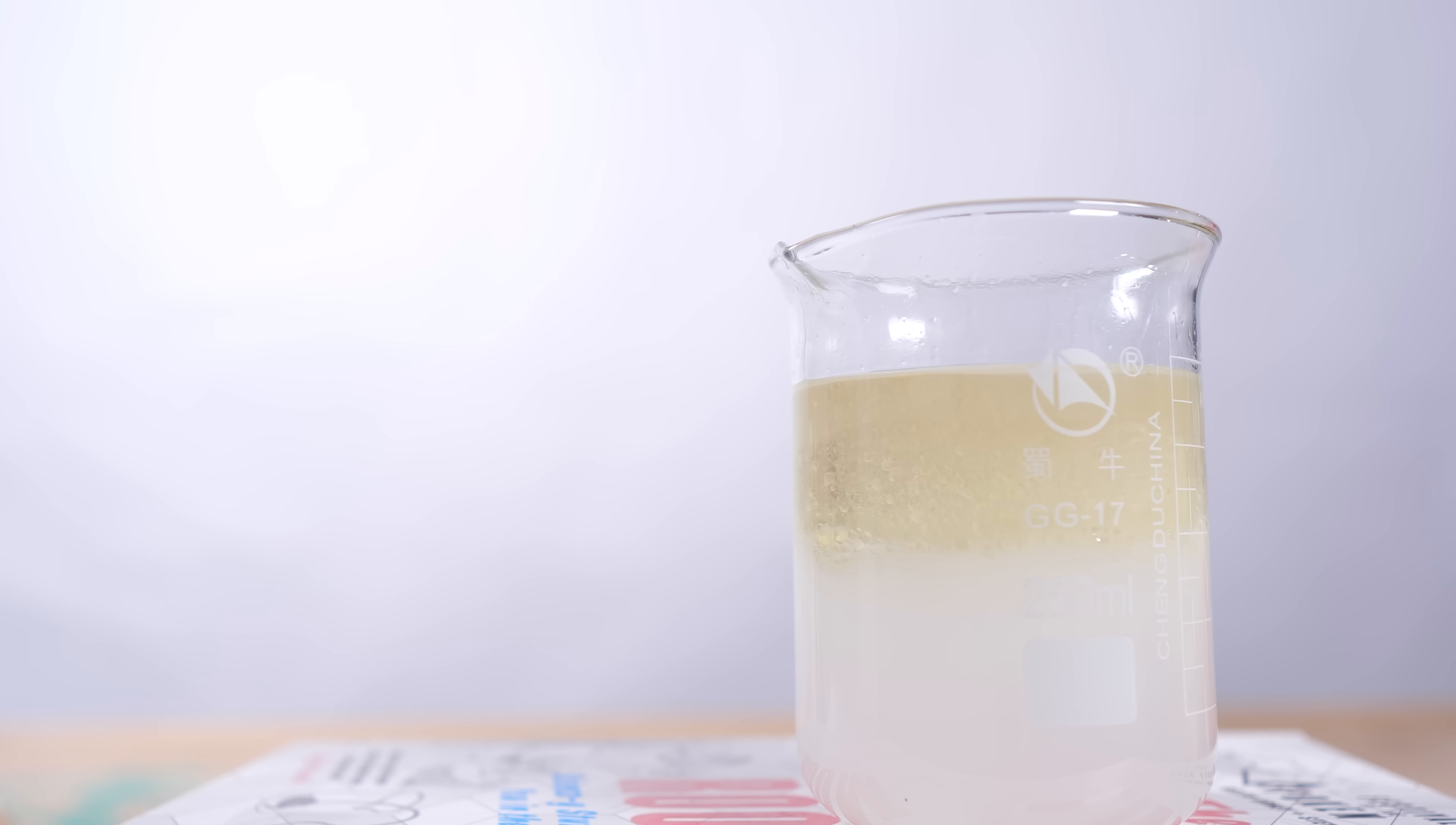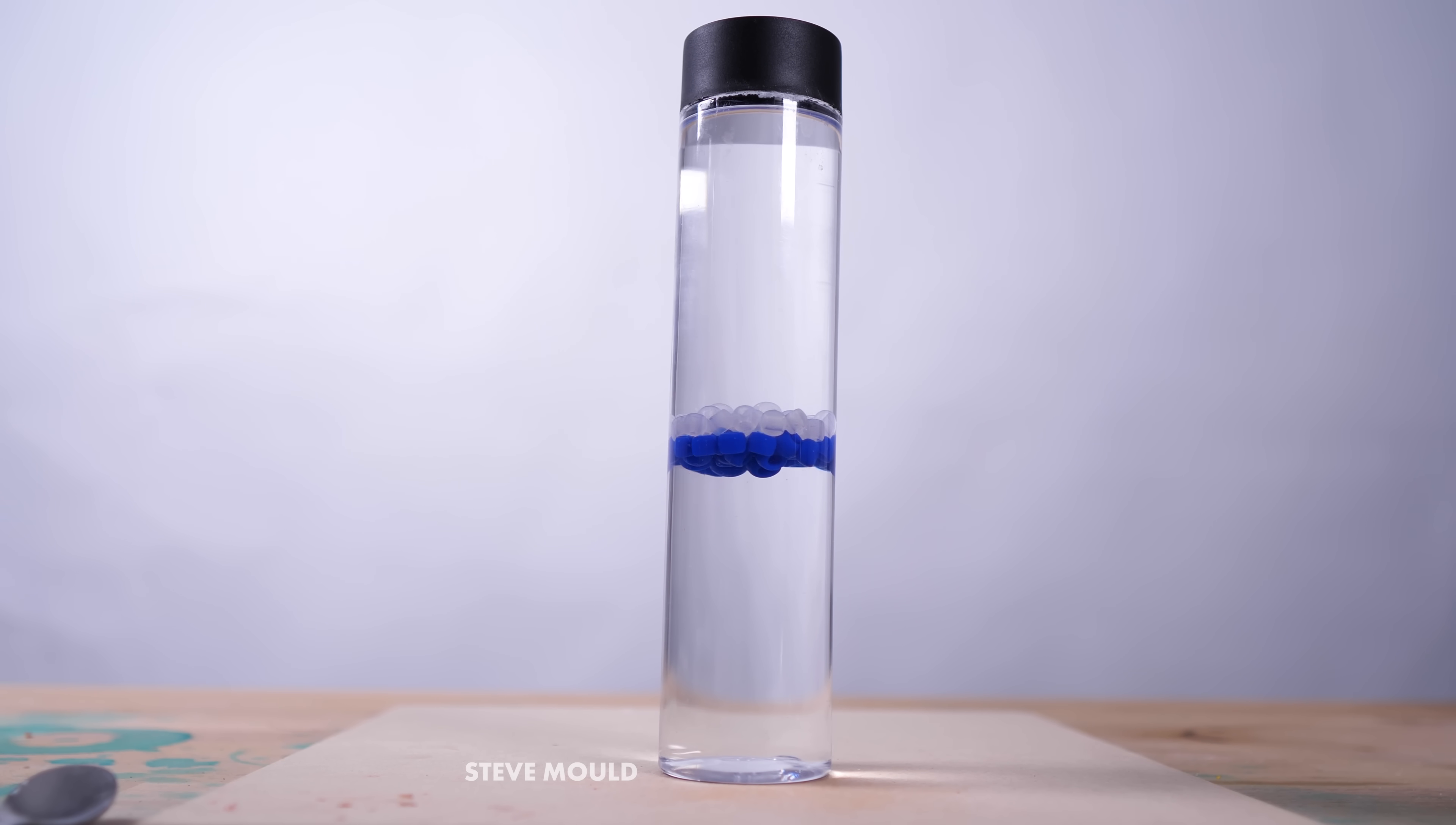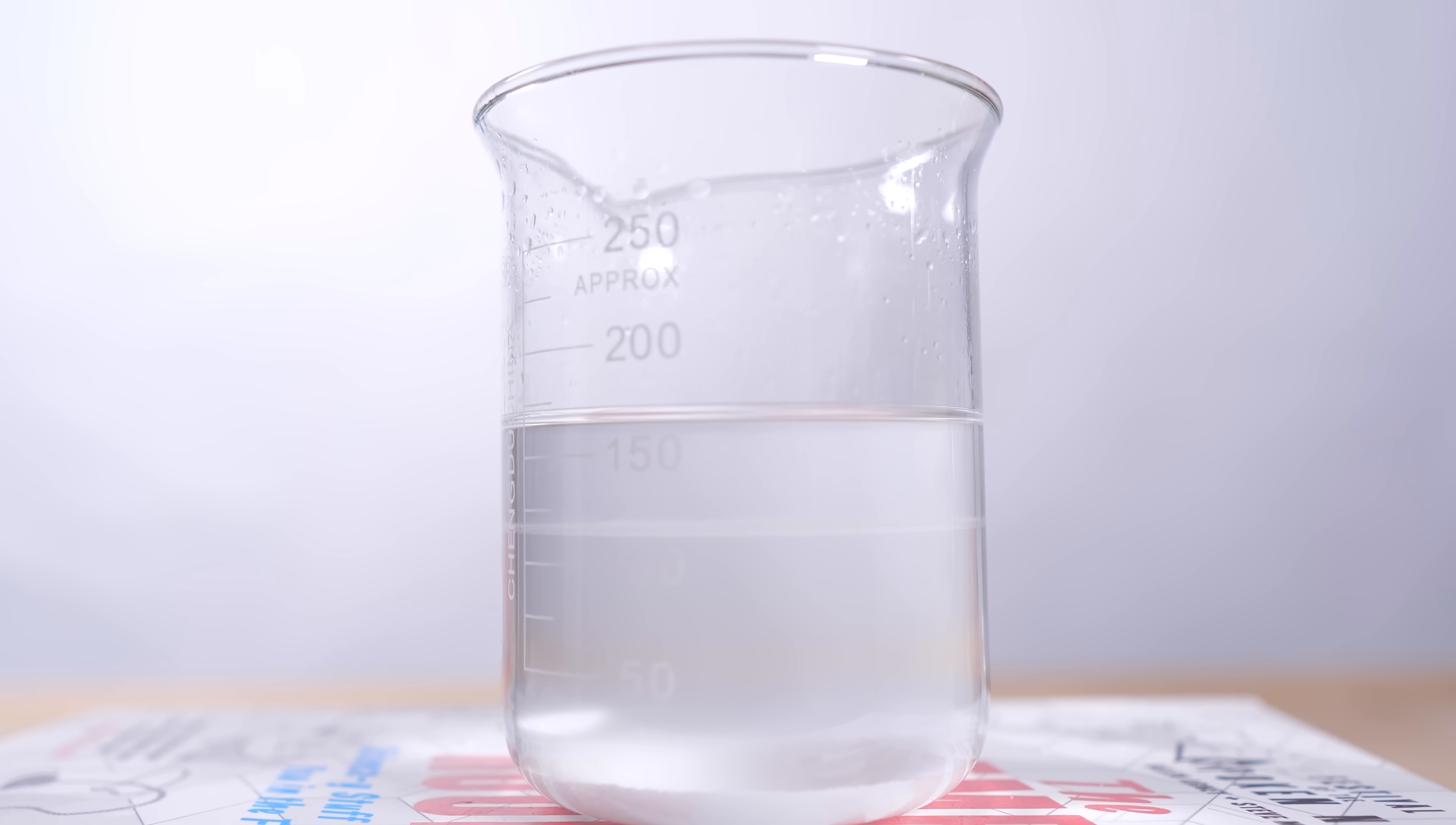And it turns out the answer was staring me in the face the whole time because actually both liquids in my original video are polar and they're not mixing. The bottom liquid is salt water and the top liquid is isopropyl alcohol. Water and isopropyl alcohol are both polar, so they should mix together. But when you add salt, it binds to the water molecules more strongly than the isopropyl alcohol can. And so the IPA gets rejected from the solution. That's called salting out and chemists use it all the time.